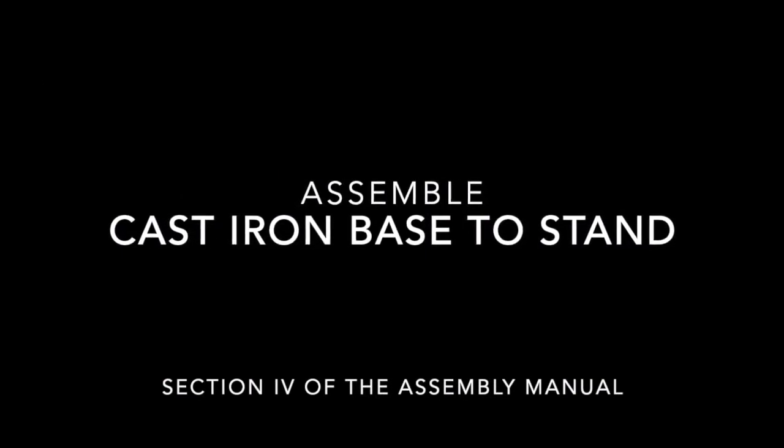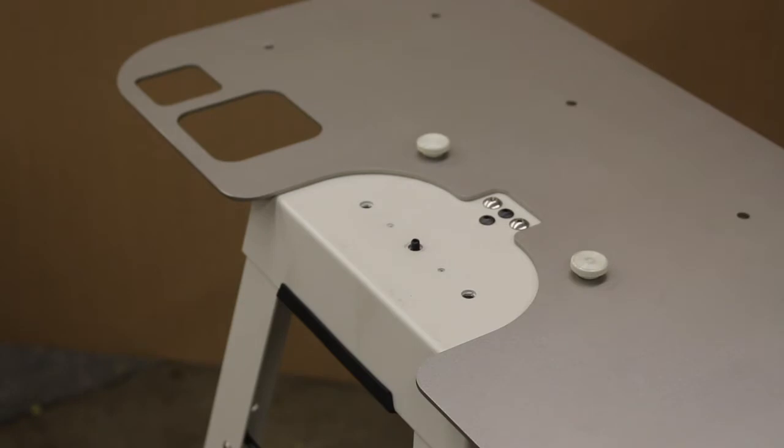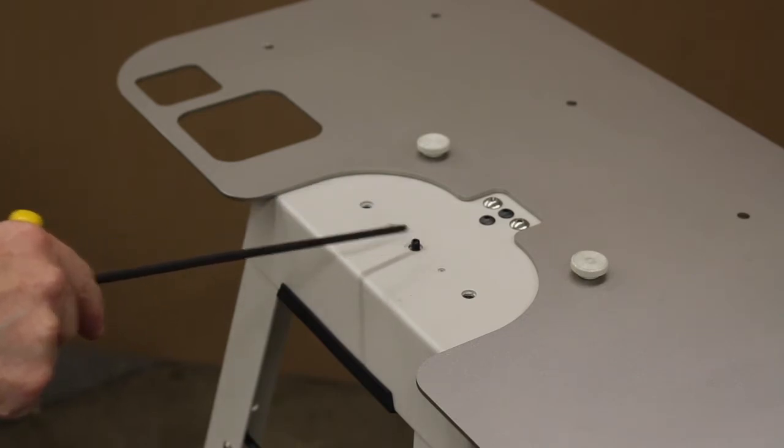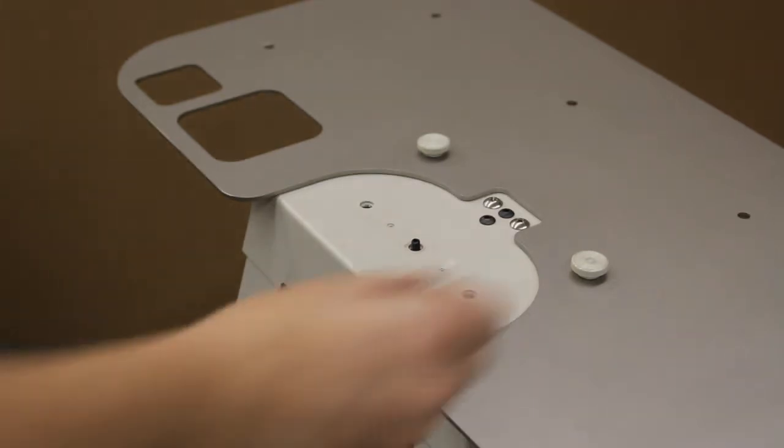Assemble the cast iron base assembly to the stand. Once you're ready to assemble the cast iron frame, take note of the holes on the stand that the frame will assemble to. This set screw is a locator screw that aligns with the bottom of the cast iron frame.